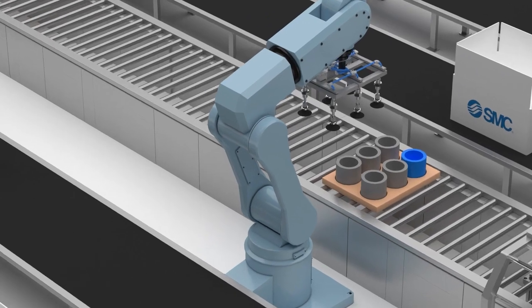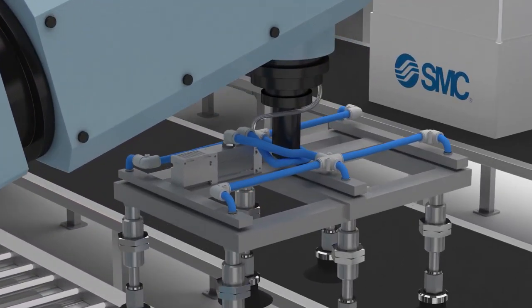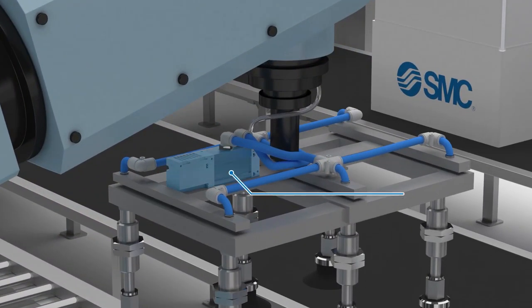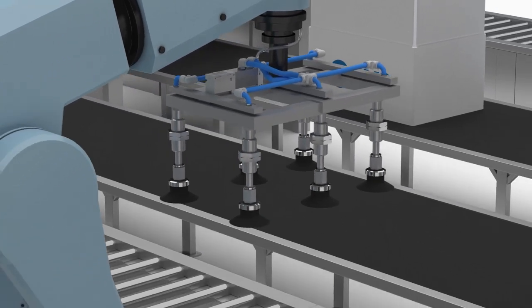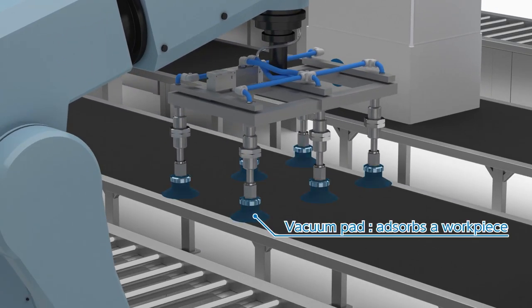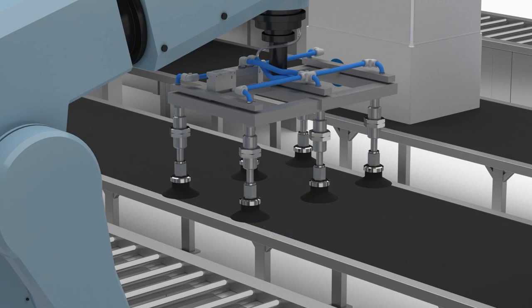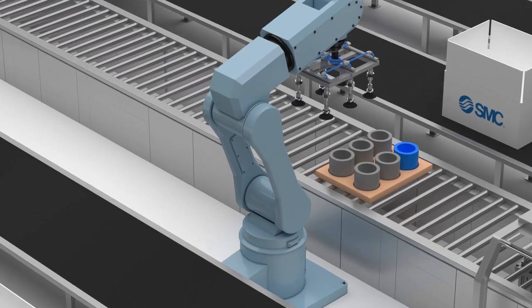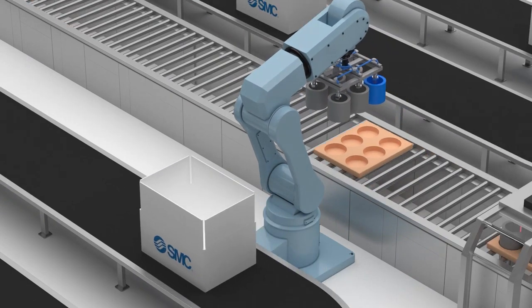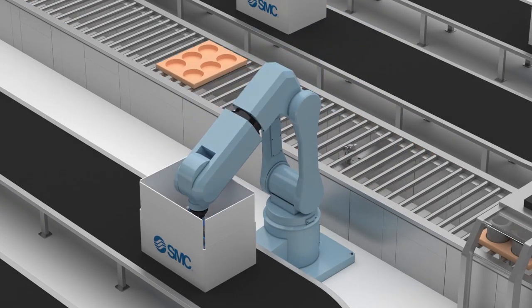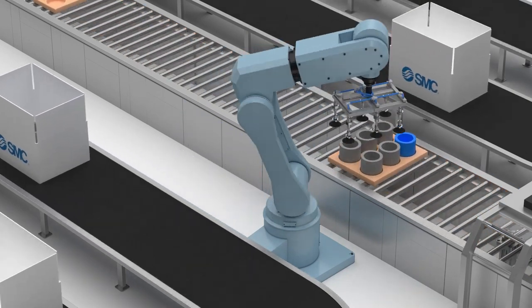In the final packaging area, a multi-stage vacuum ejector generates vacuum. The vacuum is used for vacuum pads that absorb the workpieces for lifting them. Finally, the workpieces are picked from the production line pallet and placed into cardboard boxes to be sealed and for distribution.